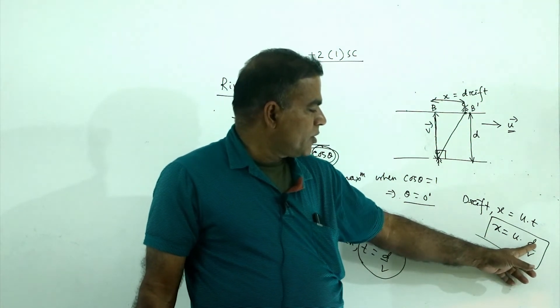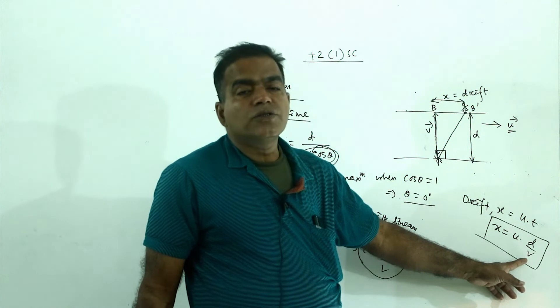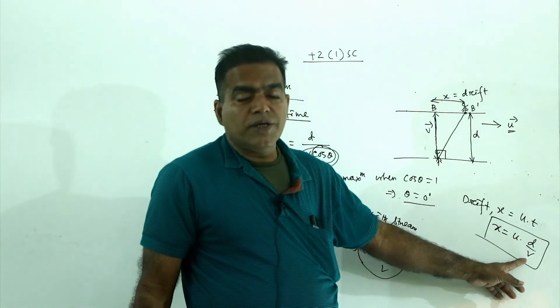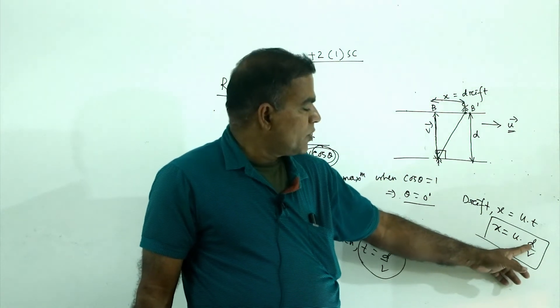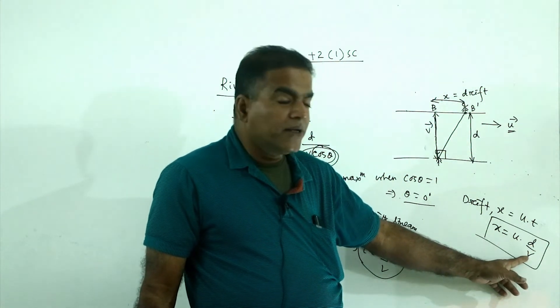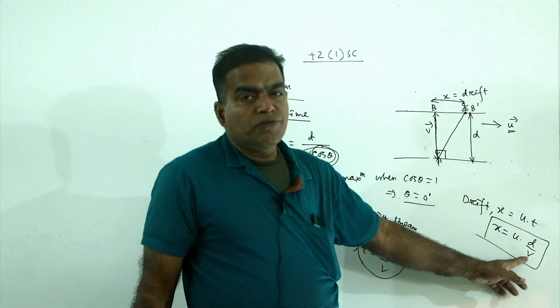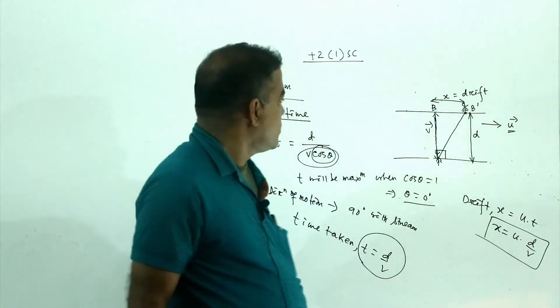The time taken is the width of the river divided by the swimmer's velocity component across the river. The drift is the velocity of the stream multiplied by the width of the river, divided by the velocity of the swimmer.